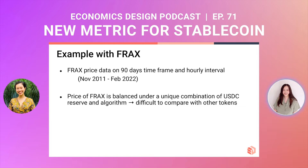We'll give a walkthrough with the example of FRAX. We are using FRAX because of its complicated and unique way of maintaining its value. It uses a combination of a USDC reserve and an algorithm that alters the collateralization ratio, which subsequently affects the demand and supply of FRAX tokens. This is a very unique combination, and because we don't see such combinations in other tokens, it is very difficult to form direct comparisons with other algorithms.